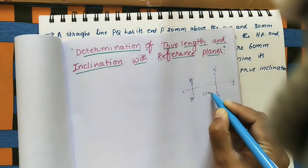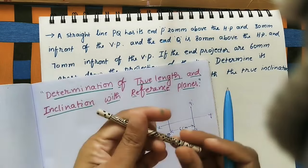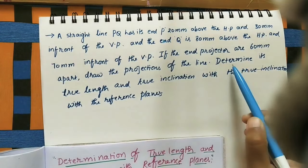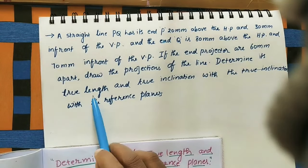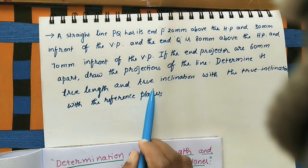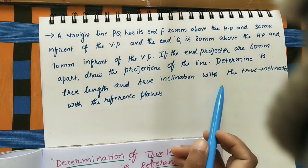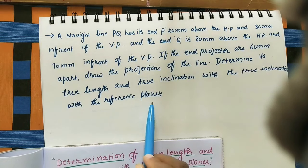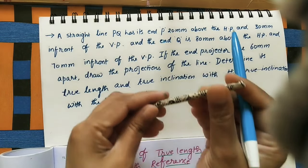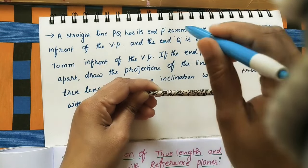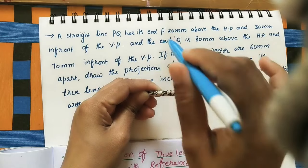We need to draw the front view and top view of this line. After this, we have to determine its true length and find the true inclination with the reference planes — how much angle this line makes with the horizontal plane and how much with the vertical plane.